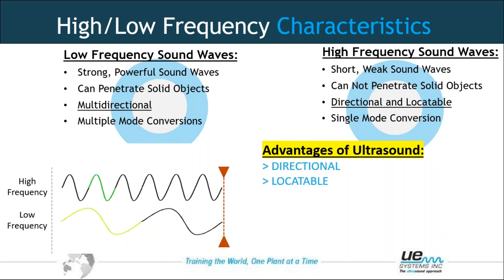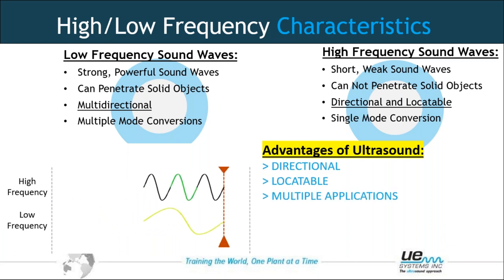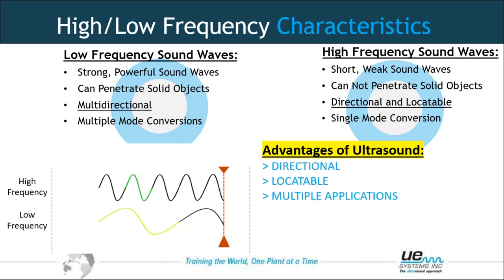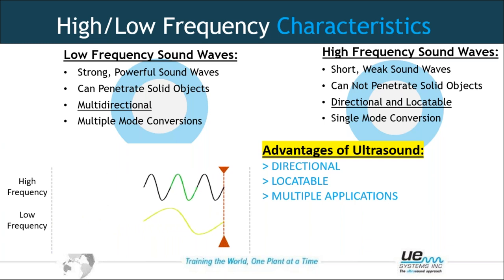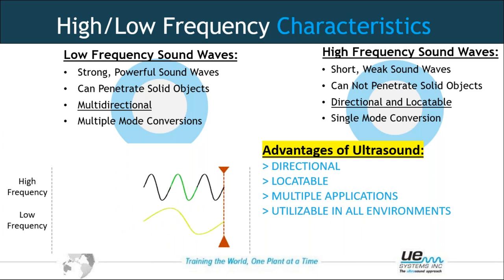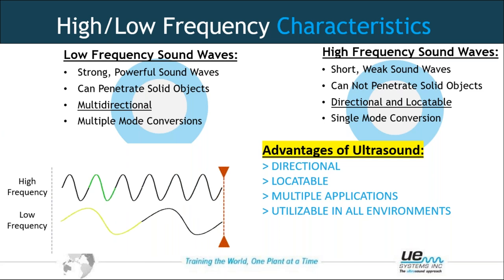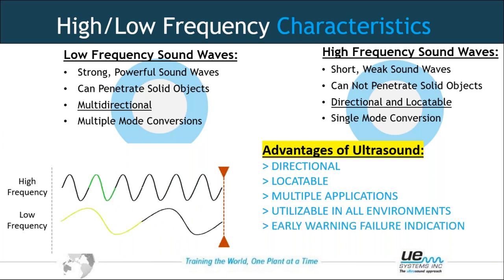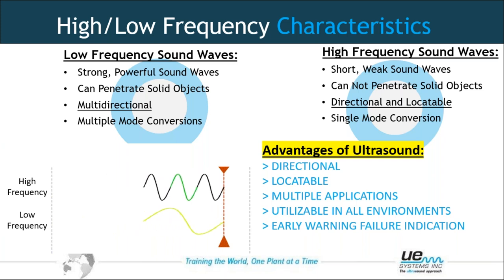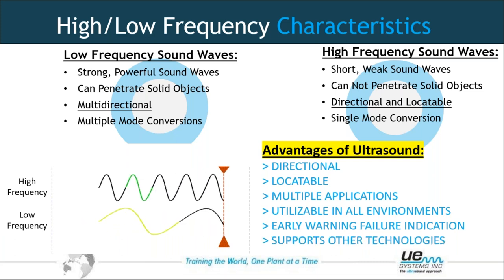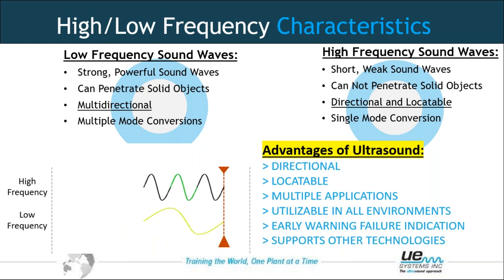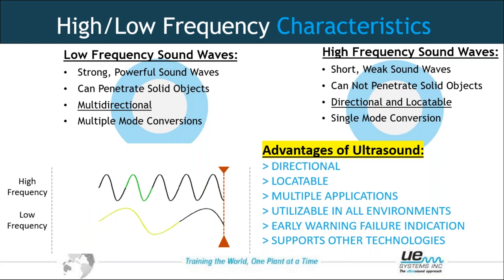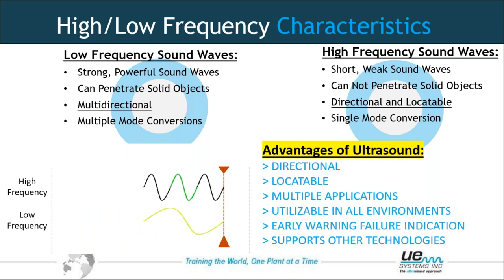The advantages of ultrasound: the directional and locatable properties help us to pinpoint the source of turbulence. It has multiple applications — electrical is one of them, along with mechanical, material leaks, steam traps, wall inspections, etc. It can be utilized in all noisy environments in your plant and stations, as well as in hazardous areas. Very importantly, it gives early warning of failure indication — ultrasound sits at the top of the P-F curve. Ultrasound also supports and goes hand in hand with other technologies such as thermography.